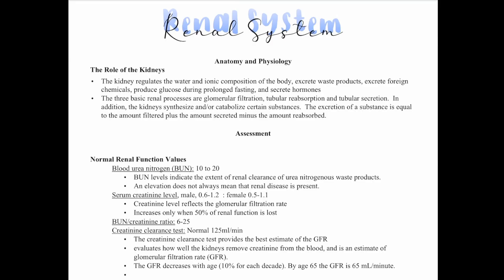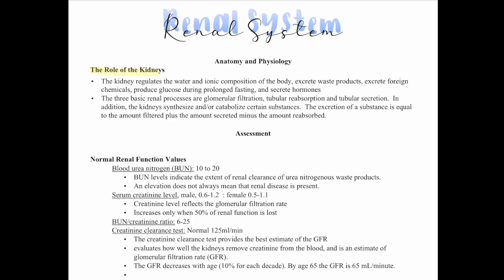Let's review the renal system. First, we'll cover a small review of anatomy and physiology. The kidneys regulate water and ionic compounds of the body, excrete waste, excrete foreign chemicals, produce glucose during prolonged fasting, and secrete hormones.